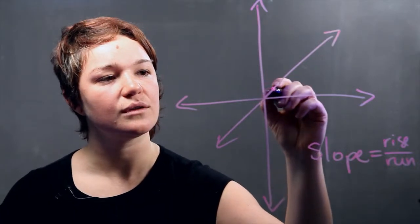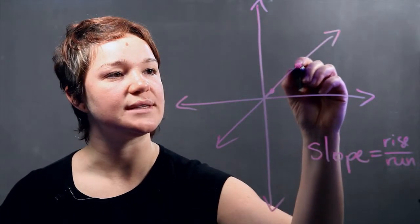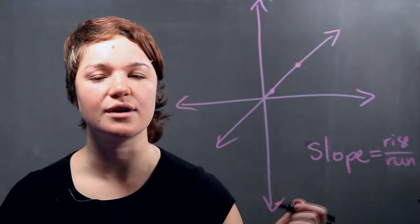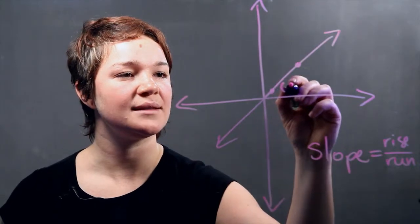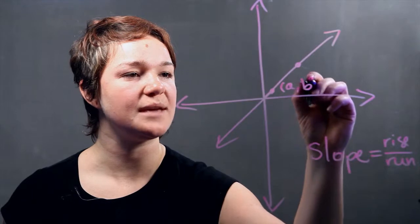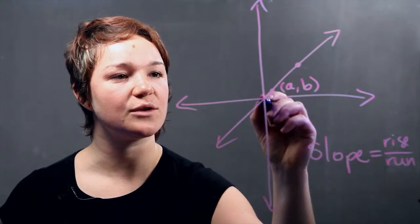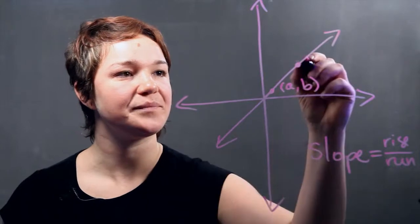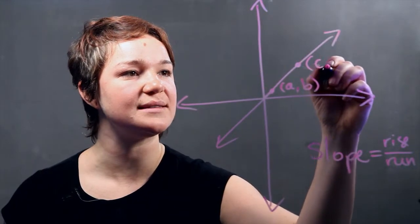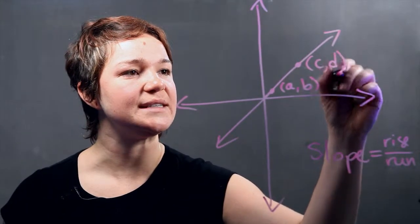So to figure it out, usually you're given two points along this plane or you can figure out the two points. Let's label them A, B where A is the coordinate along the x-axis and B is the coordinate along the y-axis. And the second point would be C, D.